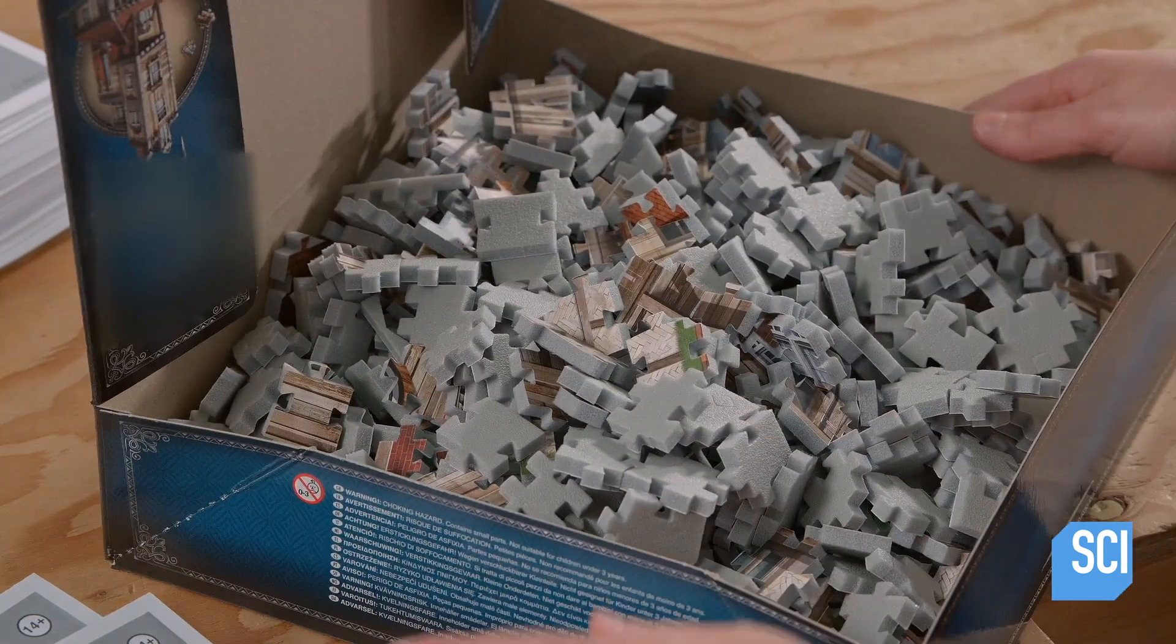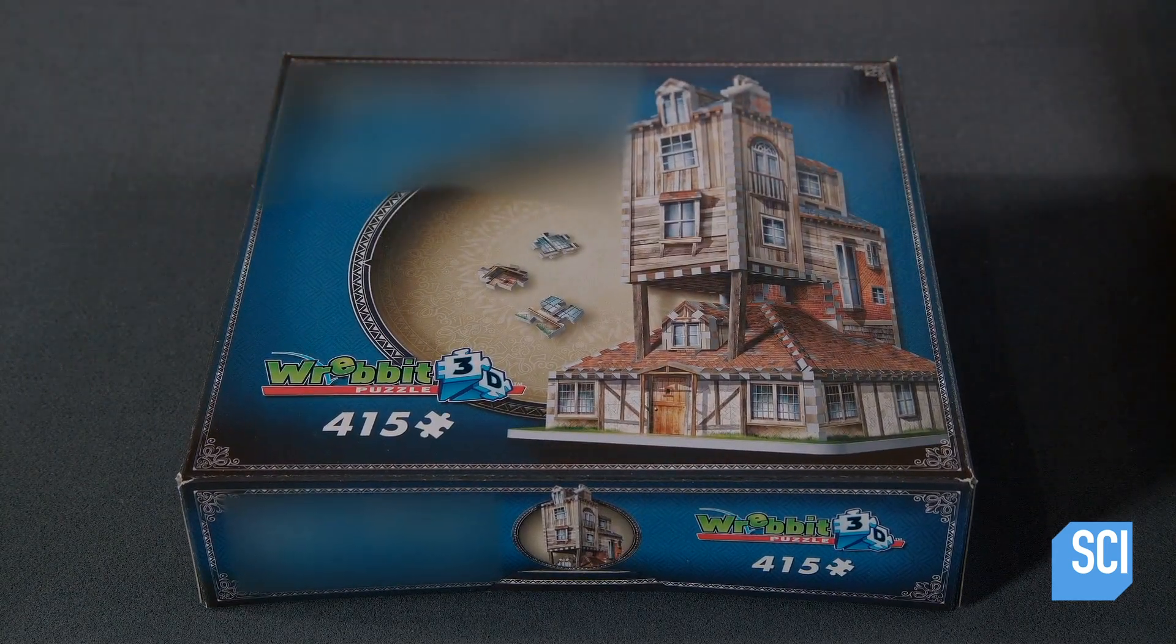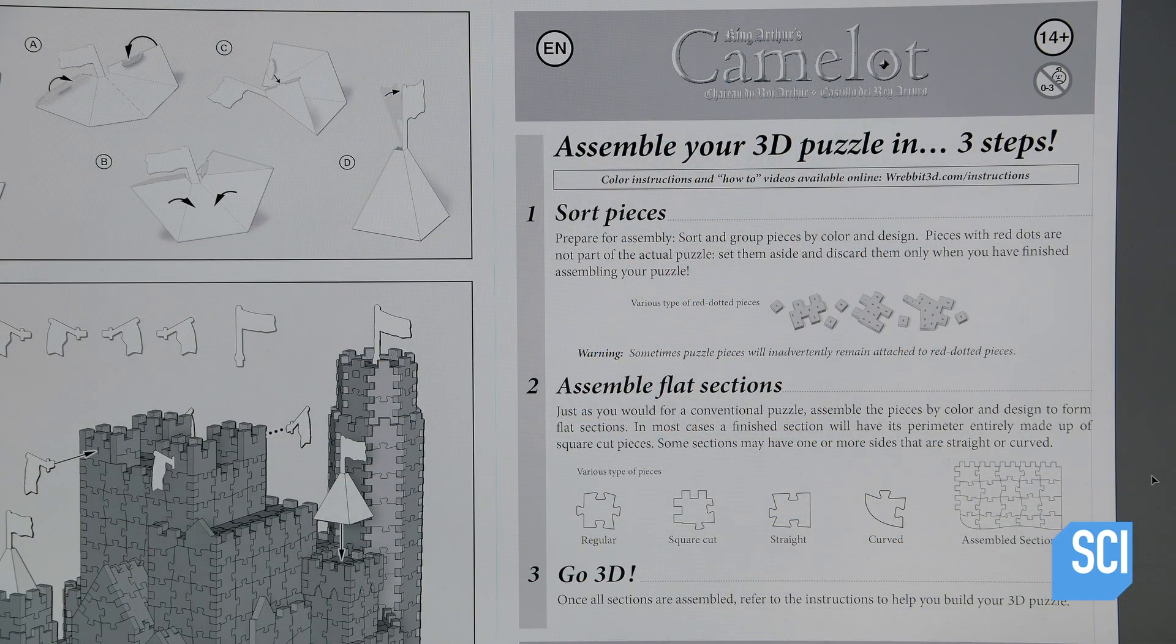The first step is to sort the pieces by color and design and set aside the ones marked with a red dot, which is part of the manufacturing process, not the puzzle itself.